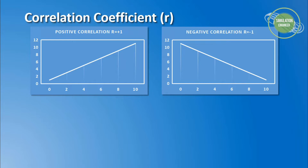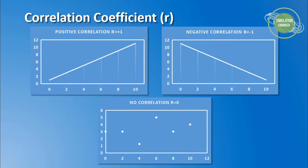The correlation coefficient always lies between plus one and minus one. The third situation is when there is no correlation between the variables — you get a scattered plot, which we denote as no correlation with r equals zero.